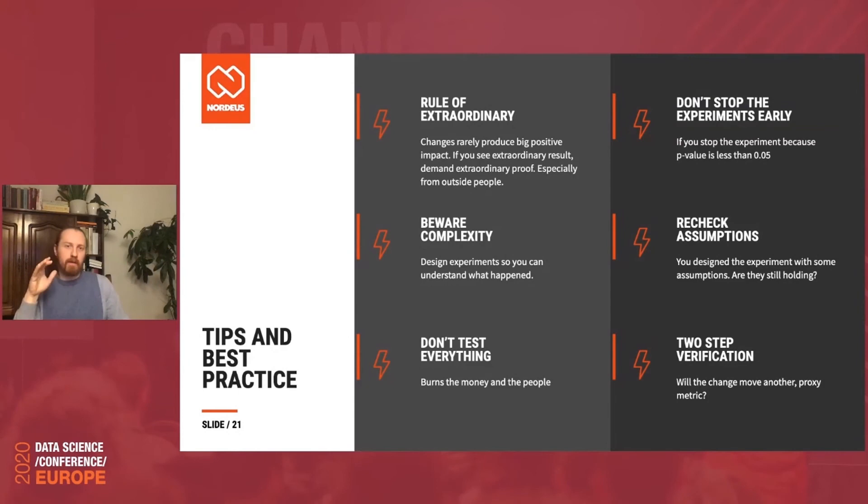So the first thing is rule of extraordinary. It says that changes rarely produce big positive impact. And if you're working on a live product, you have certainly recognized this. If you see extraordinary results, well, demand extraordinary proof. Be cautious about it. This is especially true about outside of your company results. So what often happens is that another company publishes a result which is amazing. And it can easily happen that if you implement the same thing they did, you will not get this amazing result. The reasons can be multiple. One of them is, well, maybe they just had the big problem that you don't have. So it's really not realistic to expect the same improvement they got. Another thing could be they have just fallen in some of the traps I was talking about and then just overestimated the impact they have made.